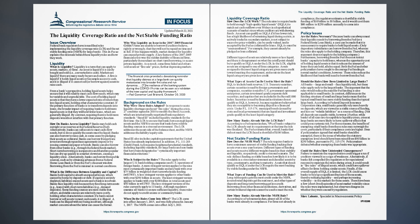Basel III also includes capital requirements that the United States has already implemented. In addition, PL 111-203, the Dodd-Frank Act, requires heightened prudential standards, including liquidity standards, for large banks and non-banks designated as systemically important financial institutions. Who is subject to the rules? The rules apply to the largest U.S. bank holding companies and U.S. operations of foreign banks. A more stringent version applies to the nine most systemically important banks and any bank with over $75 billion in weighted short-term wholesale funding (WSTWF). A less stringent version applies to other banks with over $250 billion in assets, and the least stringent version applies to banks with over $100 billion in total assets and $50 billion in WSTWF. The less stringent versions currently apply to 11 banks. Although regulators examine all banks to ensure sufficient liquidity, these rules do not apply to credit unions or community banks.